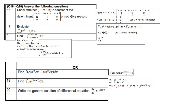Question 19: integrate x·e^(1+x²) dx. Let t = 1 + x², so dt = 2x dx, meaning x dx = dt/2. The integral becomes (1/2)∫e^t dt = (1/2)e^t + C = (1/2)e^(1+x²) + C.